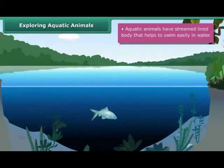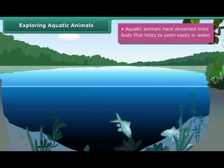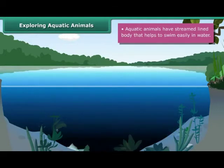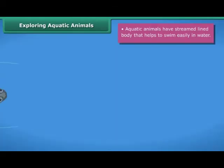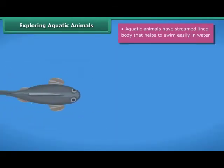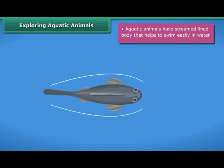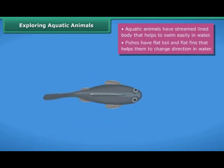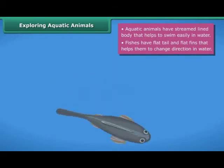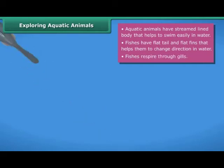Aquatic animals have special features and adaptations that help them to survive and live in aquatic habitats. Aquatic animals like fishes have a streamlined body that helps them to swim easily in water. Fishes have a flat tail and flat fins that help them to change direction in water. Fishes respire through gills.